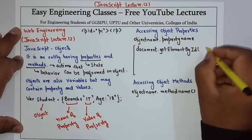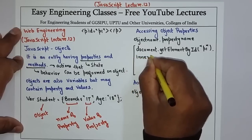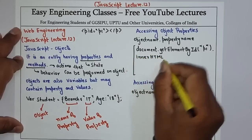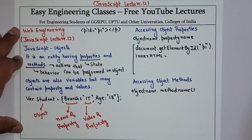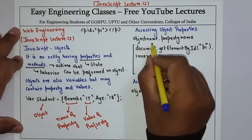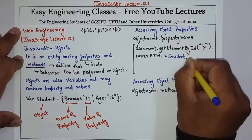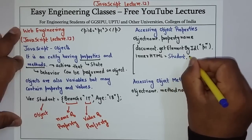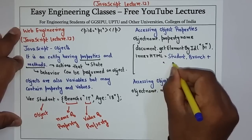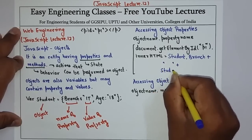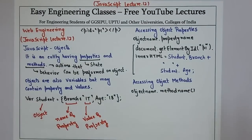Now which id do I have to use — p1, so write p1 — dot innerHTML is equals to. Now to set the value from both properties: I have to use object name dot property name. Object name is student, so write student dot branch, then concatenate with plus, then student dot age. So that is how you can access the object properties.